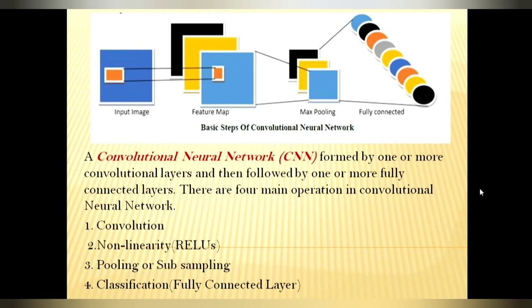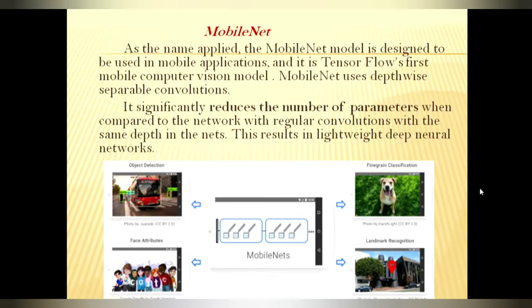MobileNet is a streamlined architecture that uses depthwise separable convolution to construct a lightweight deep convolutional neural network, providing an efficient model for mobile and embedded applications. MobileNet reduces the number of parameters compared to networks with regular convolutions of the same depth, resulting in a lightweight deep neural network.